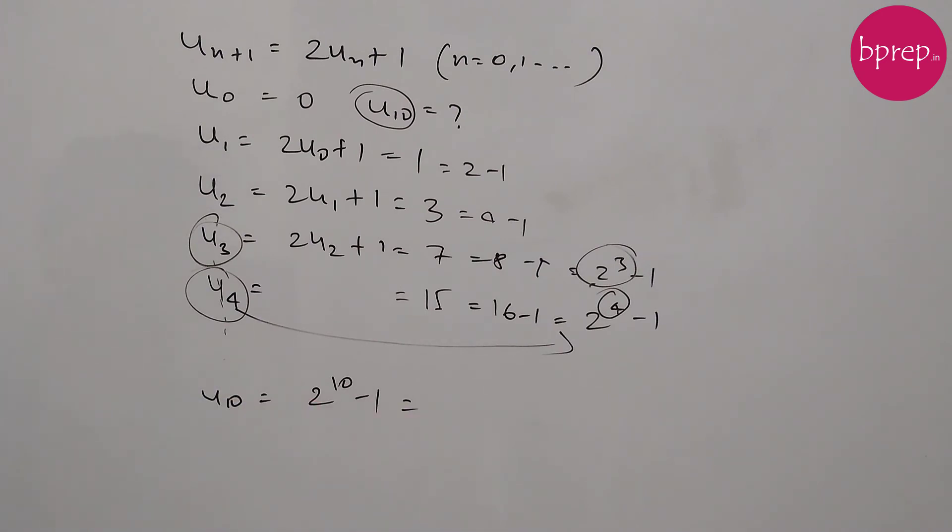And 2 to the power 10 is coming in binary series. 2 to the power 10 is nothing but... sorry, 2 to the power 10 will be 1024 minus 1, so this will be 1023. So 1023 will be the answer.